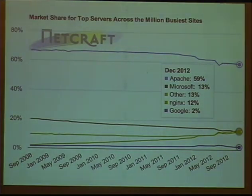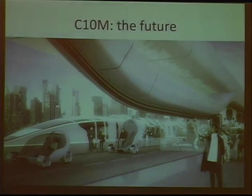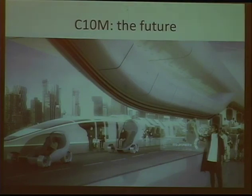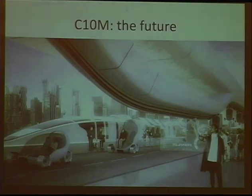This Netcraft graph of the million busiest sites shows Apache still dominates, unfortunately, but we're seeing the rise of Nginx and other scalable web servers. This presentation is mostly about the future — internet scale when IPv6 comes along. With IPv6, a single home user can easily establish 10 million connections with your server, whereas right now a home user can only establish 65,536 connections due to port limits with one IP address. We need to go to the next level of scalability.